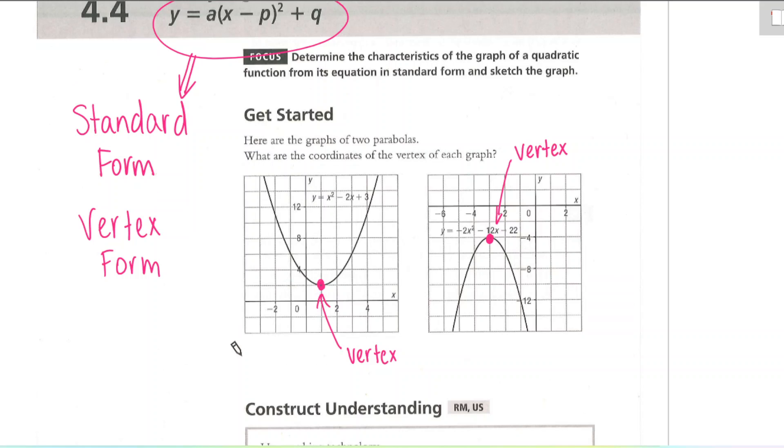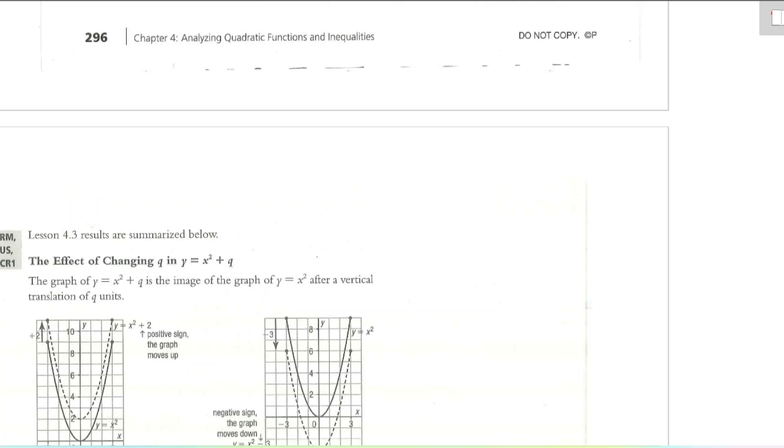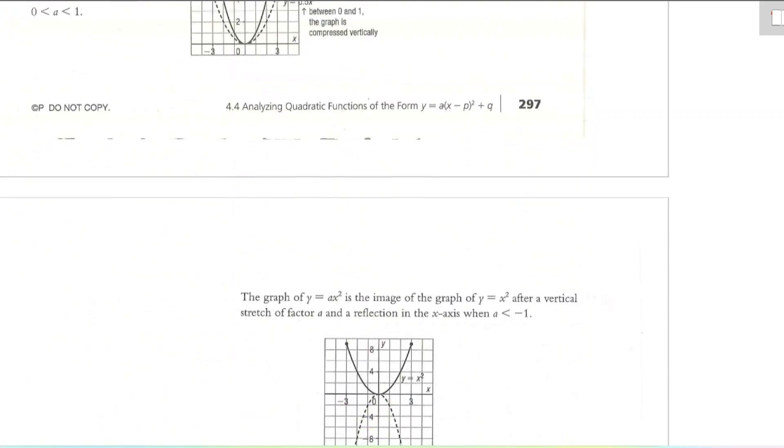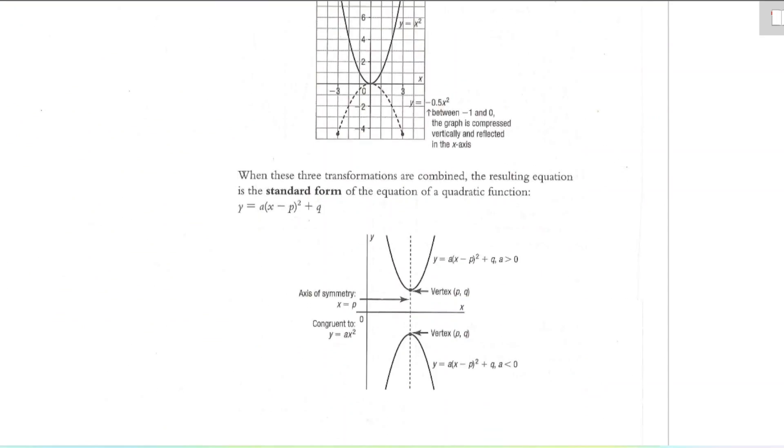I'm going to skip ahead here a little bit and just go to the next page. Now, here we see the results of lesson 4.3. So in 4.3, we looked at what happens to our parabola when we add or subtract or multiply the equation by certain numbers. I encourage you to go back and watch that lesson if you haven't already. But we're going to go straight to the summary on the next page here.